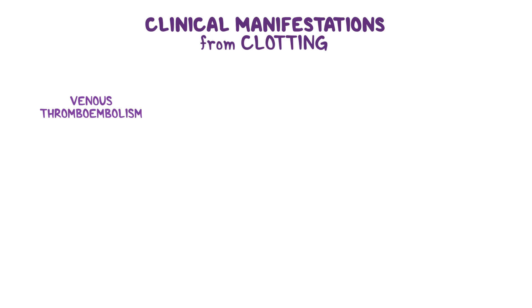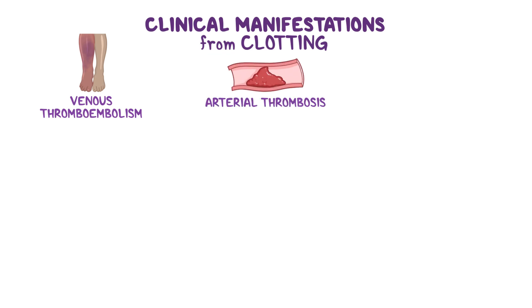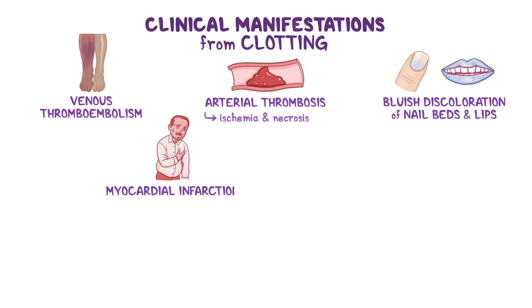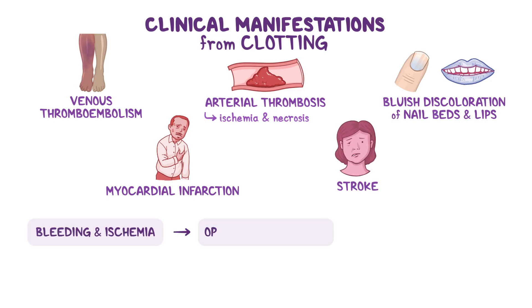Additionally, clients can present with clinical manifestations from clotting. These include venous thromboembolism, such as deep vein thrombosis, where obstructed venous flow in the legs may present with leg pain and swelling. Another manifestation can be arterial thrombosis, which can cause ischemia and even necrosis of the involved organ. Other findings may include bluish discoloration of nail beds and lips due to cyanosis, as well as complications like myocardial infarction or stroke. Ultimately, the combination of bleeding and ischemia may result in organ hypoperfusion, which may even lead to multi-organ failure.